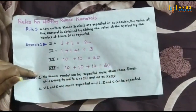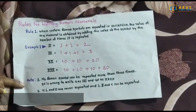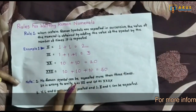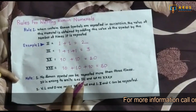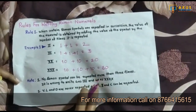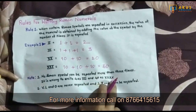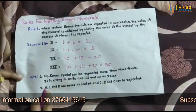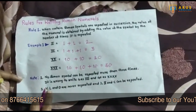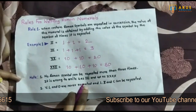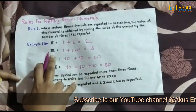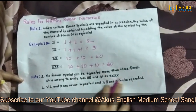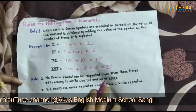Note that no symbol can be repeated more than 3 times. So the number 4 cannot be written as four times I, and 40 cannot be written as four times X. Also, the symbols V, L, and D are never repeated. The symbols I, X, and C can be repeated, but V, L, and D cannot be repeated at all.